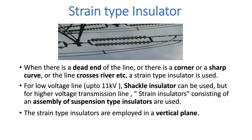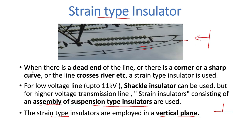The strain type of insulator is an assembly of suspension type insulators. The only difference is that suspension type insulators are held in a horizontal plane, but strain type insulators are held in a vertical plane. Strain type insulators are used when there is a dead end of the line, a corner, a sharp curve, or where the line crosses a river. For low voltage lines of about 11 kilovolts, a shackle insulator can be used, but for higher voltage transmission lines, strain type insulators are used.